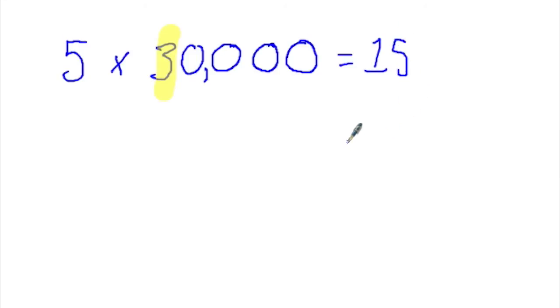My second step is to count how many zeros are in 30,000. 1, 2, 3, 4. I'm going to add four zeros to the answer I already got. 5 times 30,000 is 150,000.